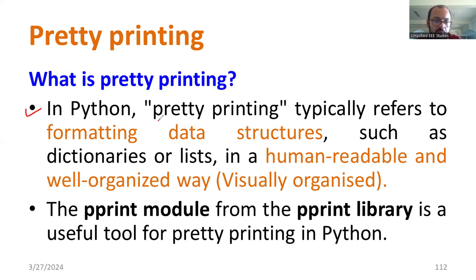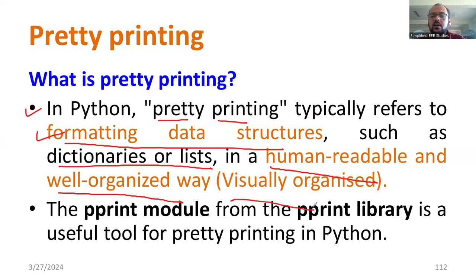In Python programming, pretty printing typically refers to formatting data structures. That is a major application, the formatting of data structures. It may be in the form of dictionary or list. The advantage is it will convert normal data into either dictionary or list form in a human readable format. Also, the data will be well organized, making it visually comfortable to observe. That is what we are using the term pretty printing.